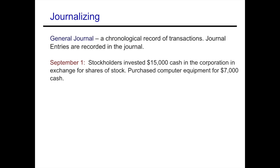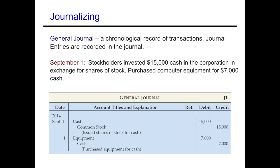We're going to look at an example. Stockholders invested $15,000 cash in the corporation in exchange for shares of stock, and they also purchased computer equipment for $7,000 in cash. Both transactions happened on September 1st. For the first one, we receive cash for part ownership in our company, and since we're a corporation we issue stock. So we receive cash of $15,000, and since the owner's claims on our assets has increased, we credit common stock. The credit is always indented — both the amount and the title of the account.